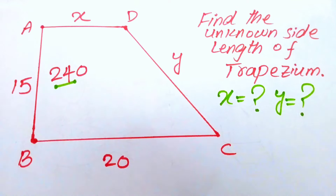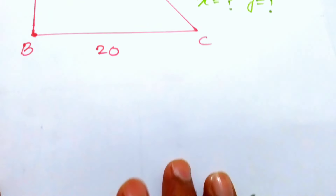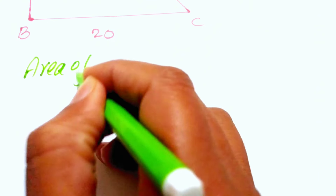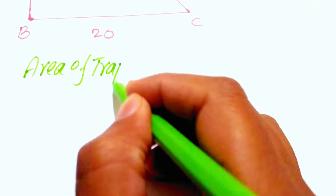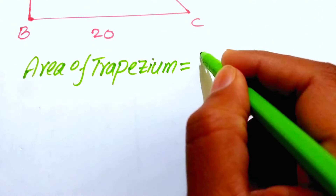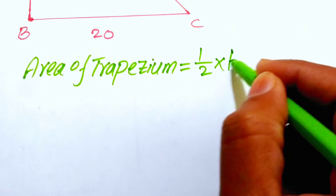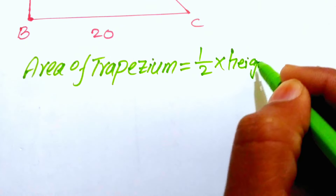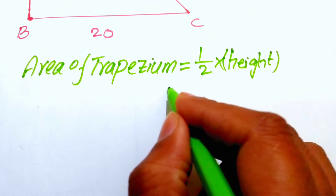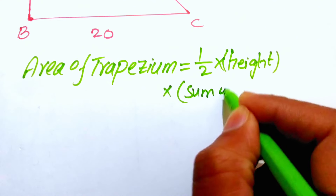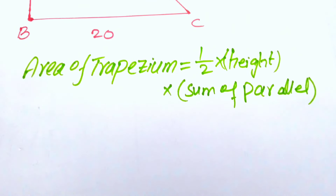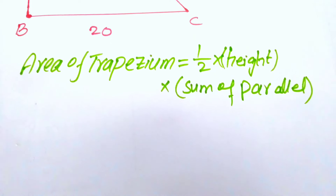The first thing we are going to do is recall the area formula for a trapezoid. The area of a trapezoid equals one-half times the height, multiplied by the sum of the parallel sides. This is the formula we will use to find the area of the trapezoid.